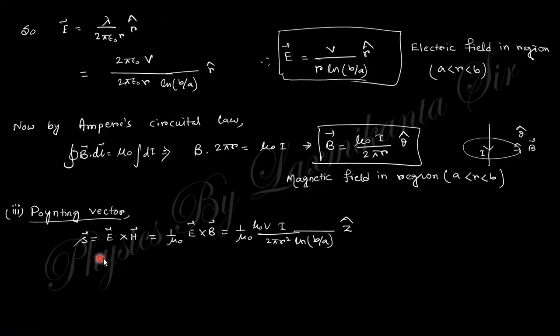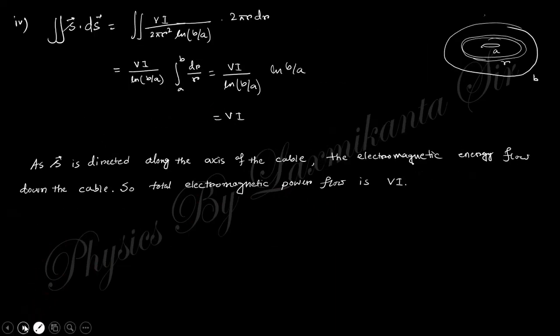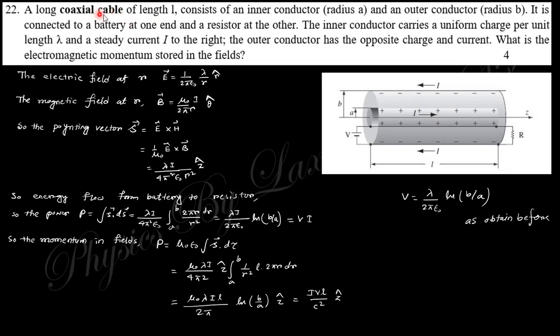The next question says a long coaxial cable of length L, inner conductor radius a and outer radius b, is connected to a battery at one end and resistance at another end. One end connects to a battery and the other to resistance.